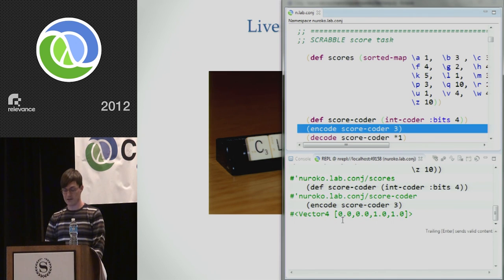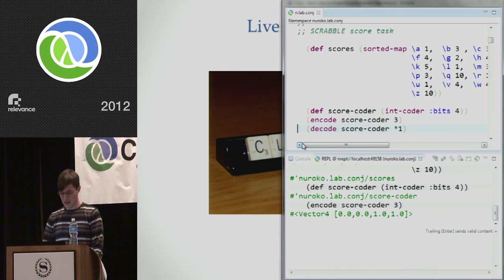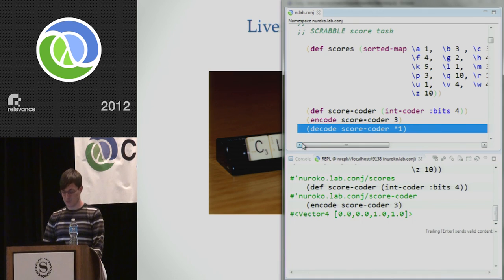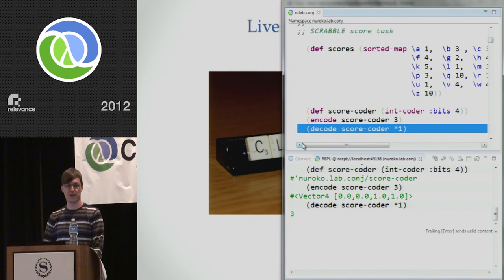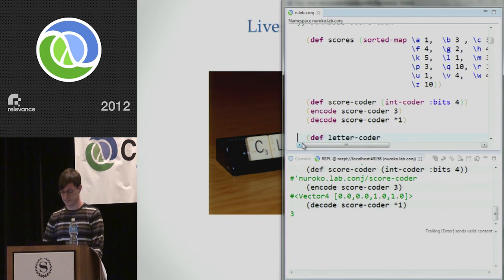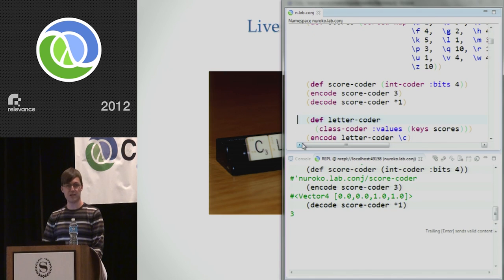Now we want to find a way to encode the scores into double vectors. Lots of ways of doing this, but a fairly obvious way is just to have a simple binary encoding. So I'm going to define a score coder as being an integer coder with 4 bits, so a 4-bit binary number. And if I then try that out with the number 3, I get a result here, which is a vector, which is 0011, which is the binary encoding for 3. I can then decode using the same coder, and I get back to 3 again. So that's the function of the coder.